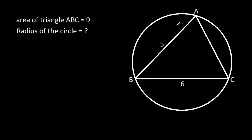In this video, we have been given that AB is 5, BC is 6, and area of triangle ABC is 9. We have to find the radius of the circle.